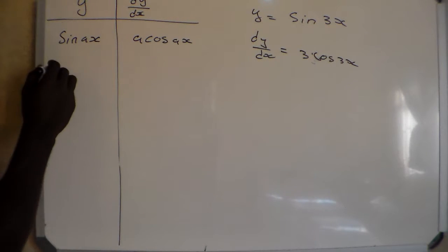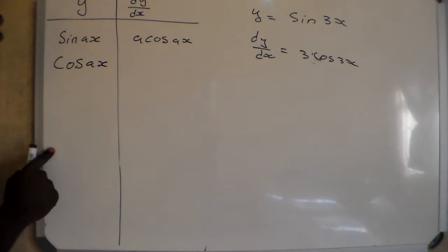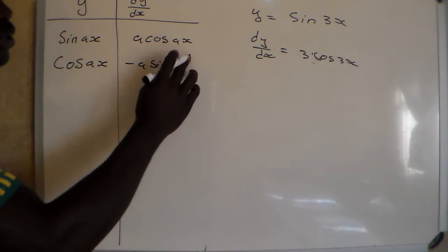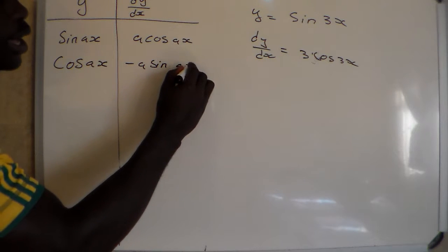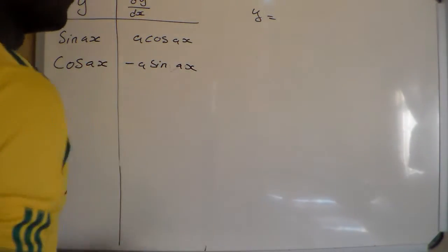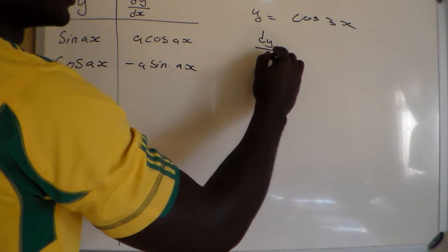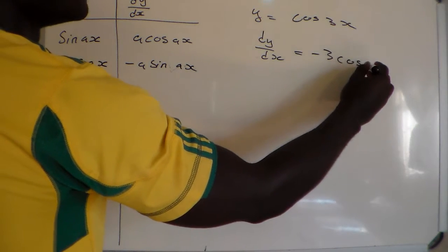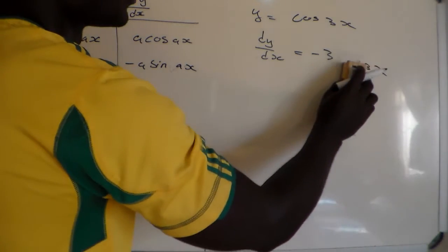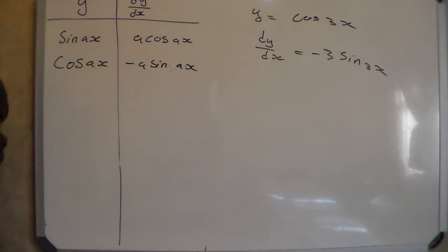And then if we derive cosine: the derivative of cos(AX) is going to be negative A·sin(AX). For example, if we have Y equals cos(3X), therefore dY/dX will be equal to minus 3·sin(3X). That is the rule for the derivative of cosine.